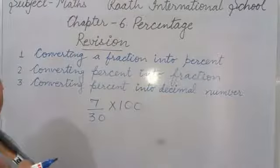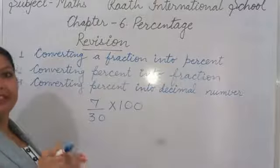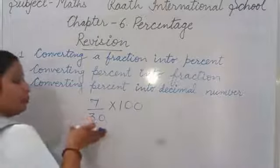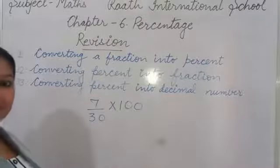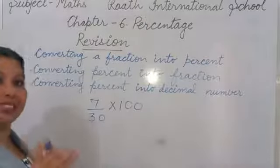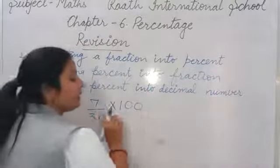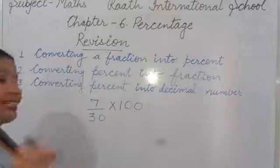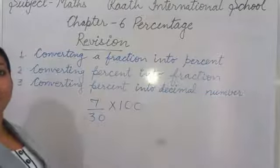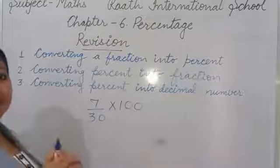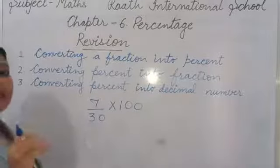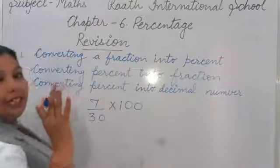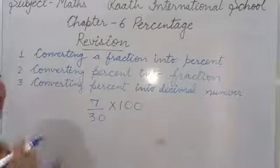But if the question says only 'convert fraction into percentage' or 'convert into percent', then in that condition we apply this formula — multiply by 100. Whether it is a fractional number, a decimal number, a whole number, or anything, whenever you are asked to convert into percentage, multiply by 100 and solve to get your answer.